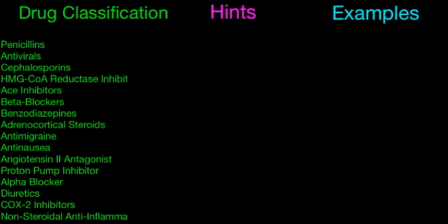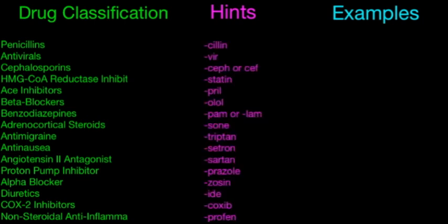The hints that are going to help with these: all drugs ending in -cillin are going to be penicillins. All drugs ending in -vir are going to be antivirals. -Ceph, with two different spellings, is going to be your cephalosporins. -Statin is going to be your HMG-CoA reductase inhibitor. -Pril is going to be your ACE inhibitor. -Olol is going to be your beta blockers. -PAM or -LAM is going to be your benzodiazepines. -Sone is going to be your adrenocortical steroids.